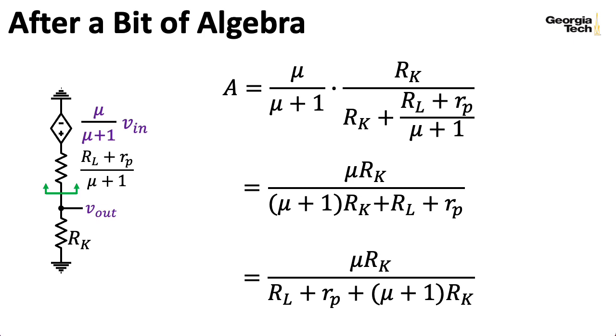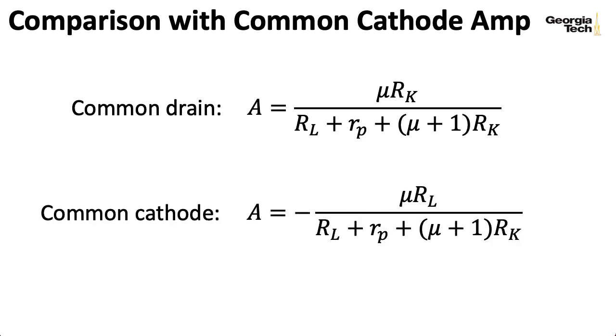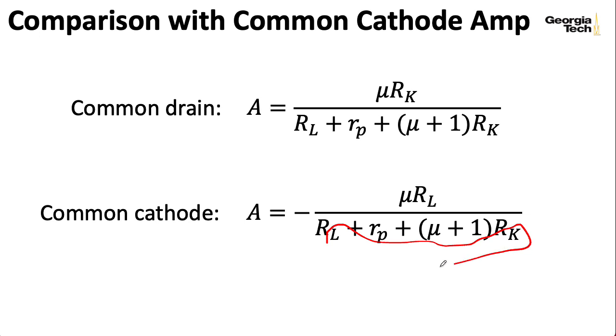It's instructive to compare this formula for the gain for our common drain amplifier with the formula we previously computed for the common cathode amplifier. When presented in this form, there's two main differences. One, obviously, this has a minus sign in front because the common cathode stage is inverting. But the only other real main difference is that we have RK in the numerator for the common drain amp and RL in the numerator for the common cathode amp, but the denominators are, in fact, the same. So one way of viewing this is that one amp is kind of a vaguely flipped version of the other, although I would not want to push that analogy too far. These aren't really symmetric structures. If there was a real underlying symmetry, then you would flip the RK and the RL here, but you don't. They're in the same spot, so these aren't really symmetric. I just found that little bit of commonality interesting.